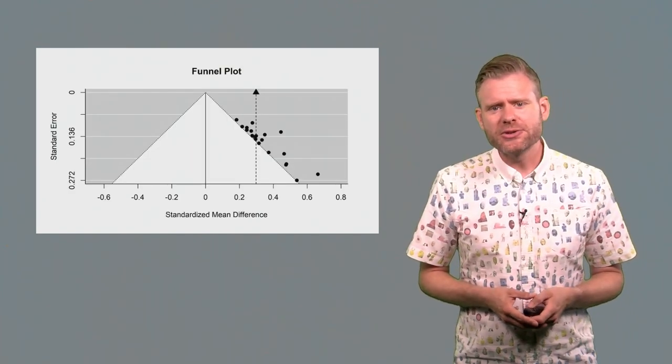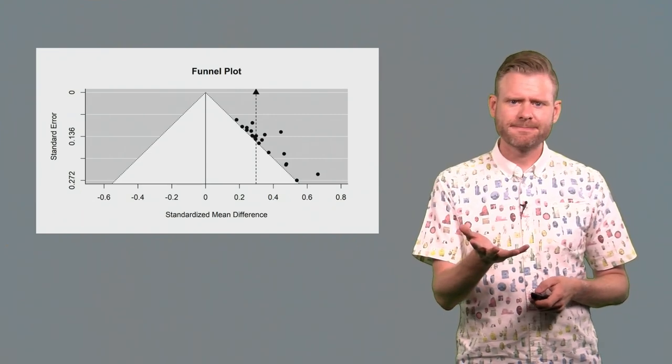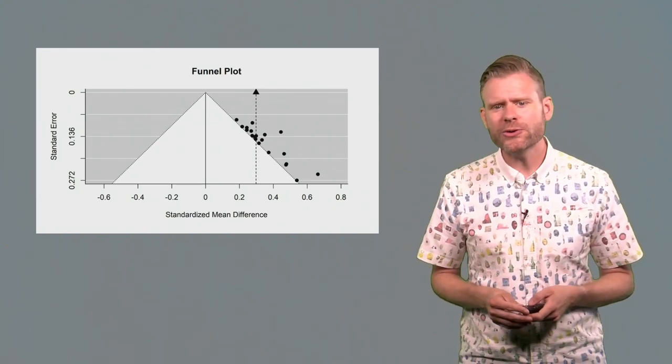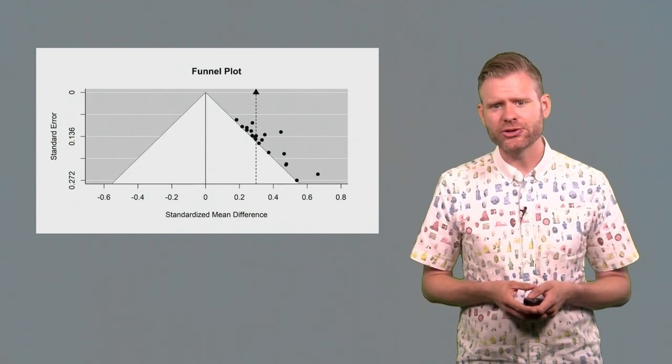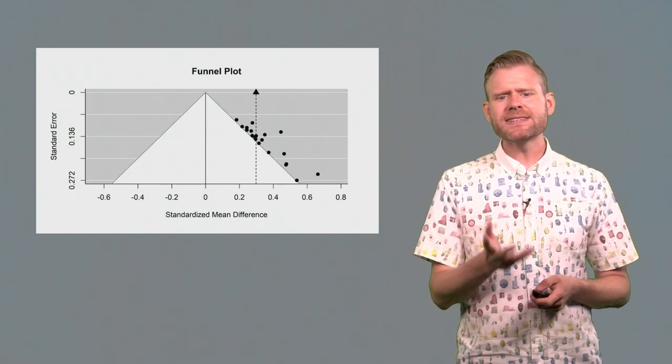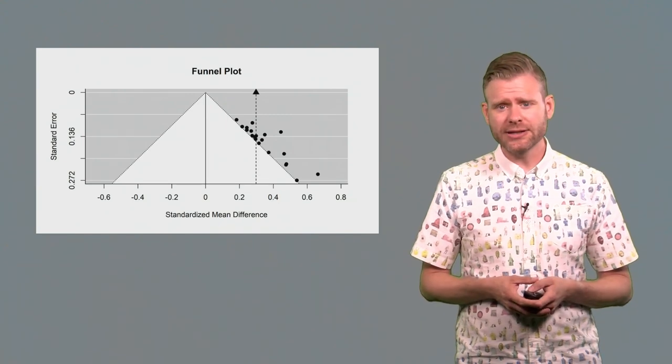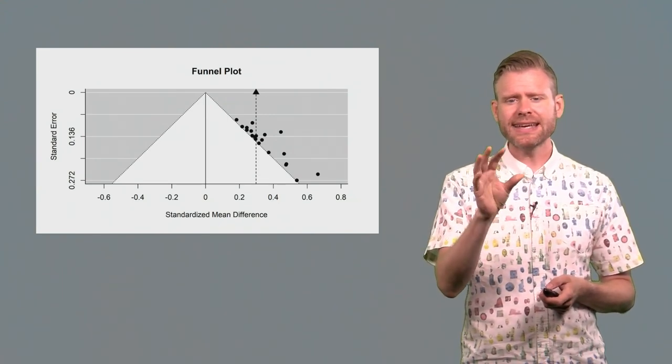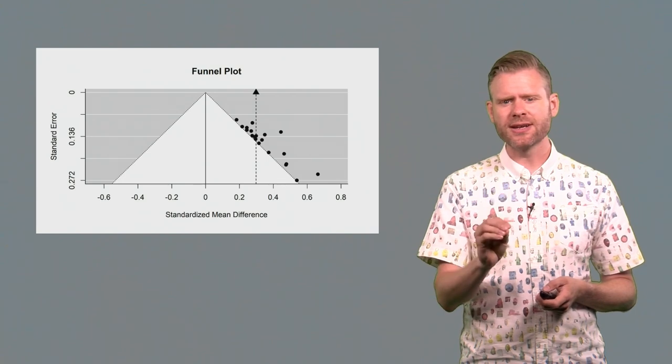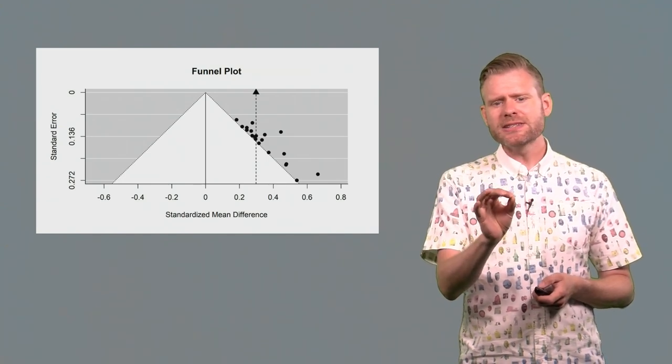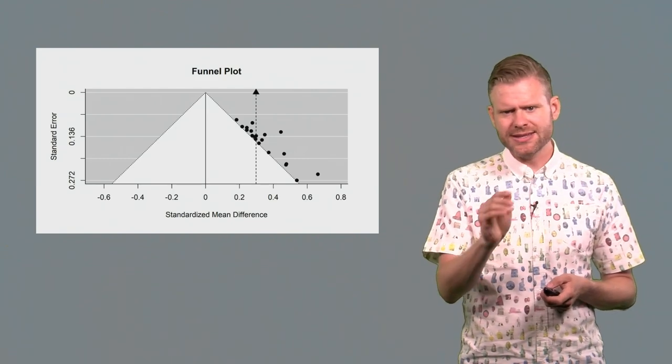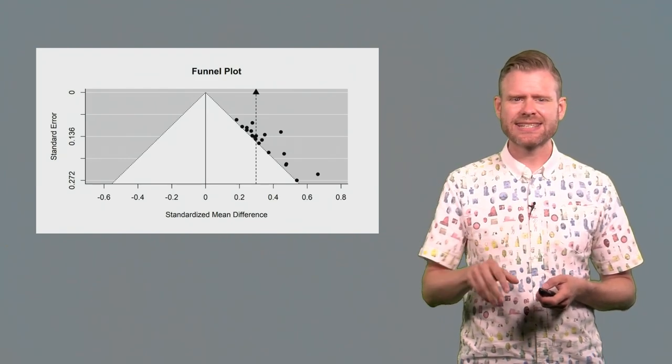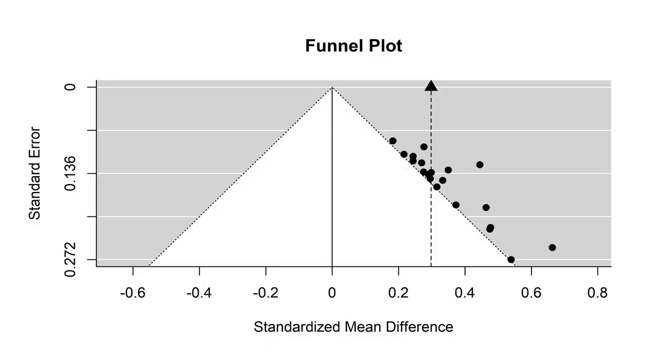One way to visualize the results of a meta-analysis is through a funnel plot, and this is a useful tool also to explain how certain bias detection tools work. In this case, we see an overview of a scientific literature, because every individual dot in this graph is a single study. The single study is represented as a standardized mean difference, the effect size, on the x-axis. On the y-axis, the standard error is the standard deviation divided by the square root of the sample size. So the smaller the standard error, the larger the sample size.